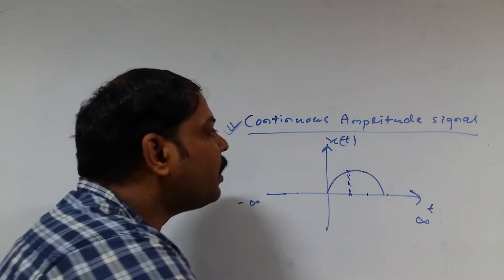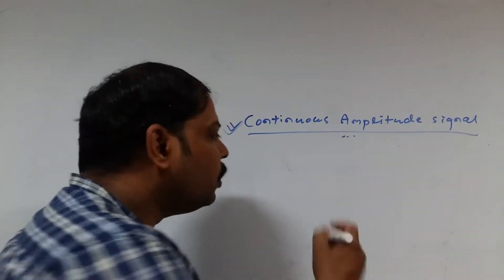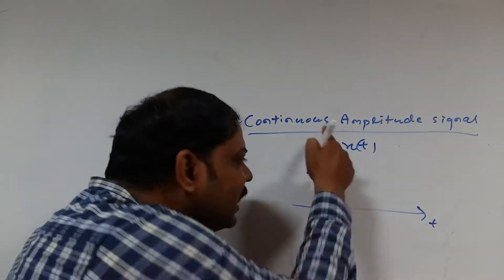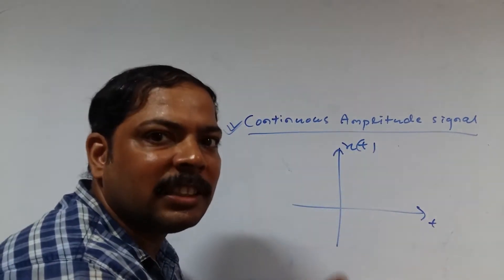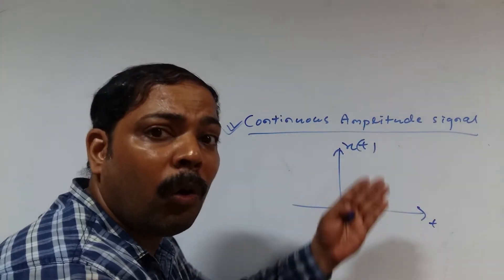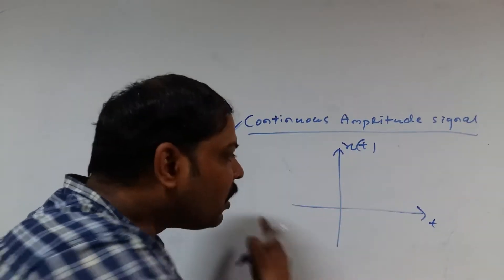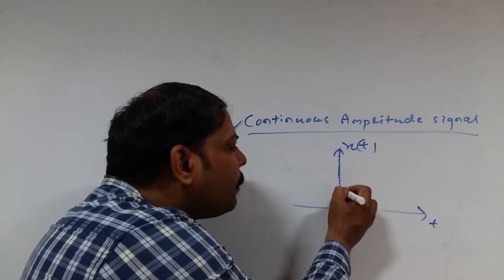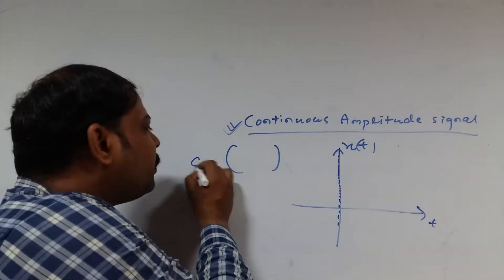Now let us discuss continuous amplitude signal. Again, same thing you just do — this is your time axis and this is your x(t). This axis is the amplitude axis. Now, here what you have to do: again, you just imagine a set. Within this set you just put all the points on the amplitude axis, not on the time axis. Every point you consider over the amplitude axis and all these points you put within a set.